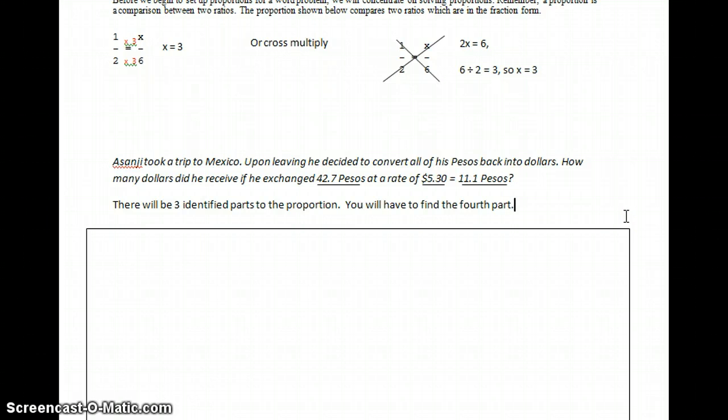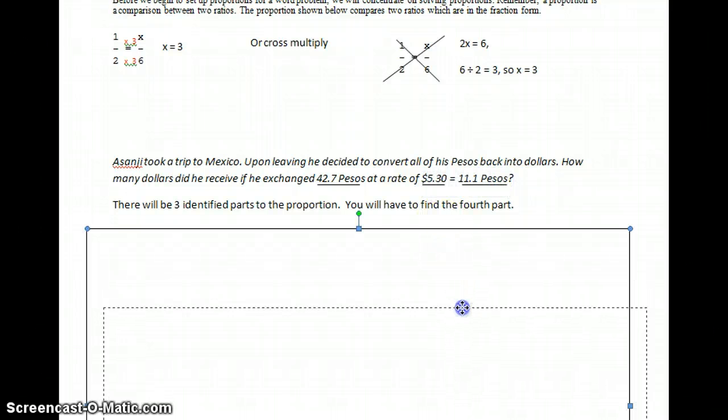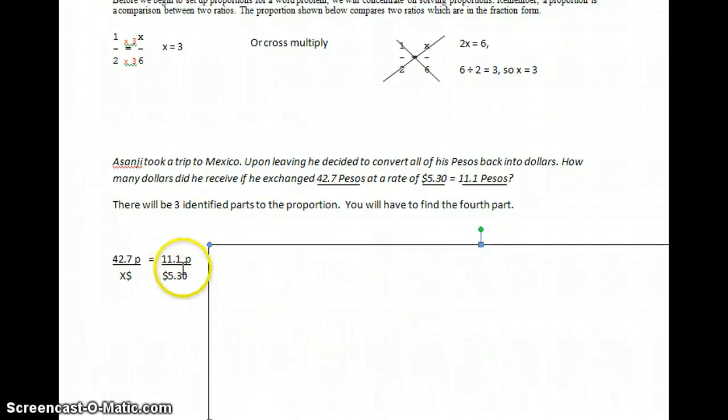Now what I'm going to have to do is use proportional reasoning to find the fourth one. I'm going to have to set this up as two fractions. Well, as you can see, I've got $5.30 equals 11.1 pesos. So that is my one fraction.